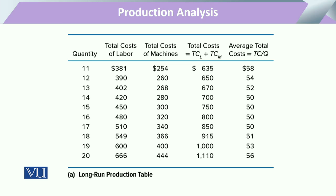When we explain this using the same table from our previous example, we can say that after attaining the minimum efficient level of output, when the entrepreneur expands beyond this point, output increases but with this increase in output there is also an increase in the average total cost of the business.